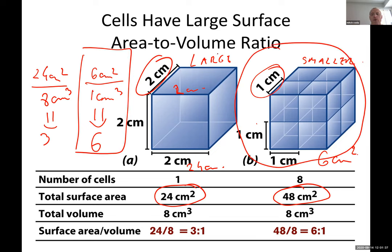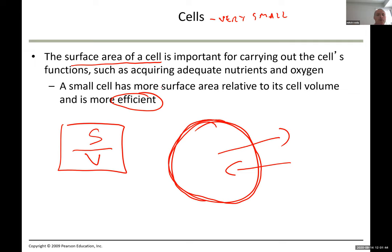Which one has a higher surface-to-volume ratio? Definitely the smaller cell. That's why it's very important to have a higher surface-to-volume ratio, because all the stuff has to come out. The more activity that happens inside, the more surface area we need. If you work in a house with a lot of activity, it takes a long time to get everything out.